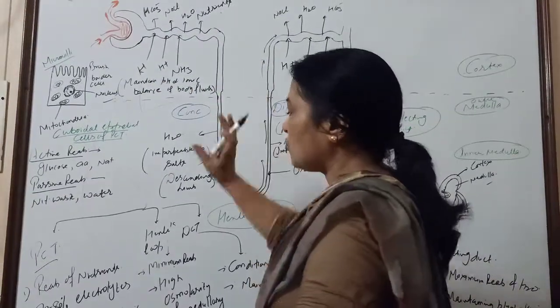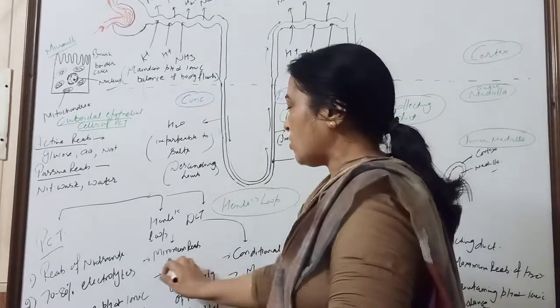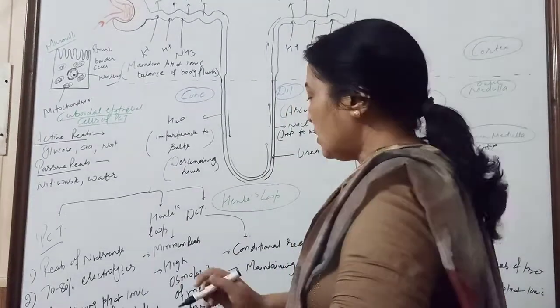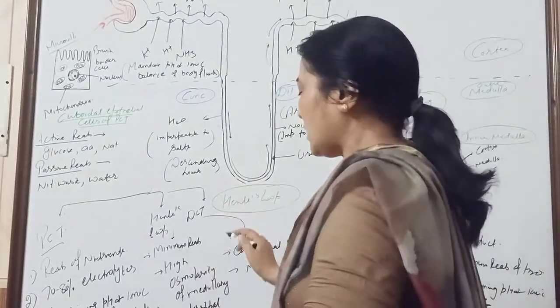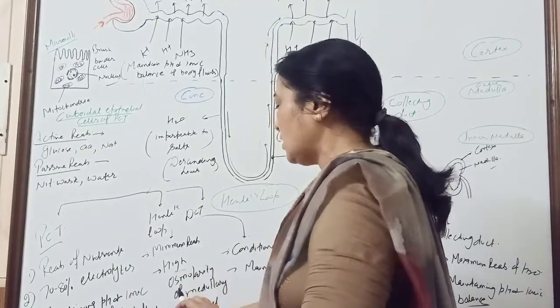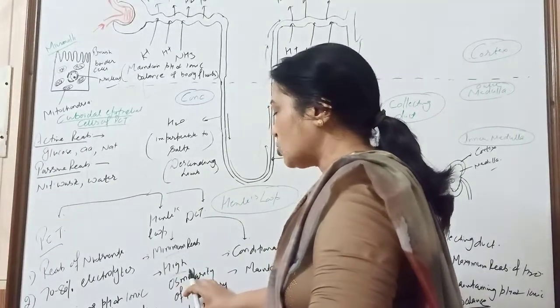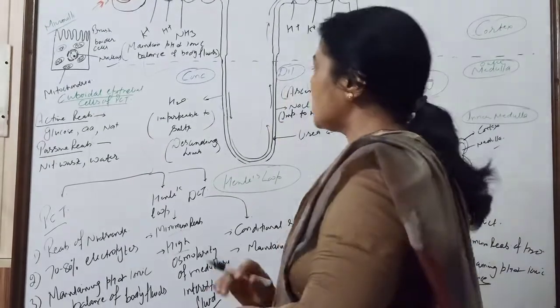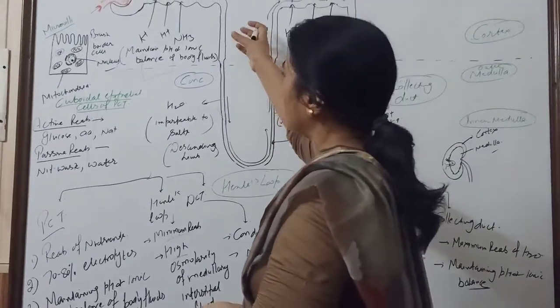Then, the second is the Henle's loop. The Henle's loop, the minimum absorption is made, but the important role it plays is to maintain high osmolarity of medullary interstitial fluid. Which way does it maintain it? Let us see.